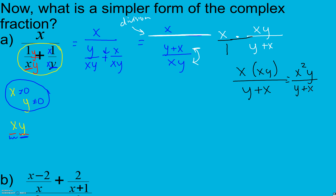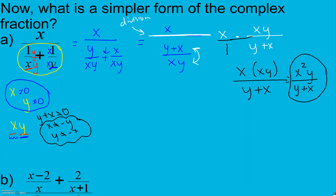The last thing we need to do is check the new denominator we introduced. We need y plus x cannot equal zero, so x cannot equal negative y and y cannot equal negative x — x and y can't be opposites.